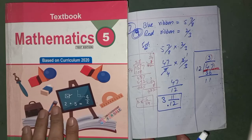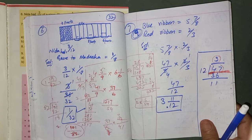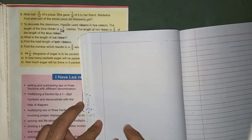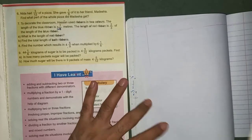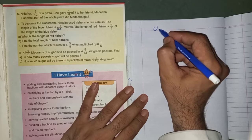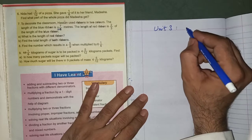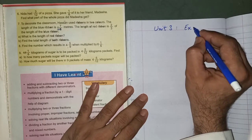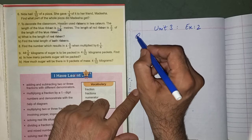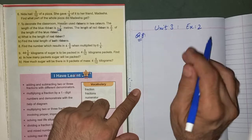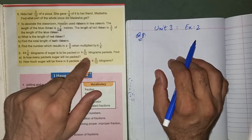Bismillahirrahmanirrahim. In Grade 5 Mathematics, Unit number 3, Exercise number 2. Question number 8: Find the number which results in four and five-ninths when multiplied by one and one-sixth.